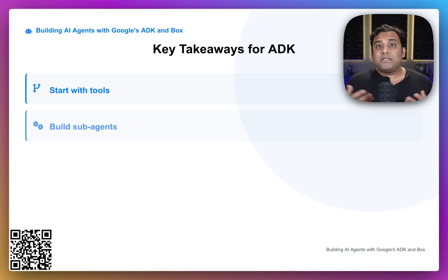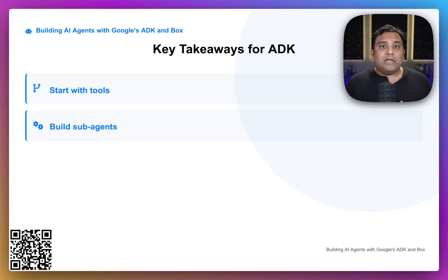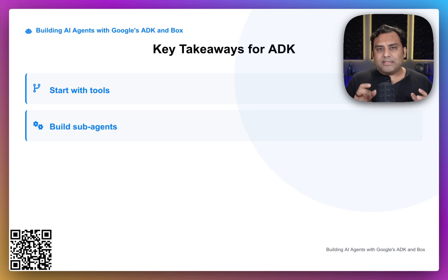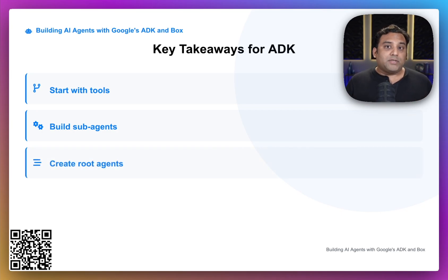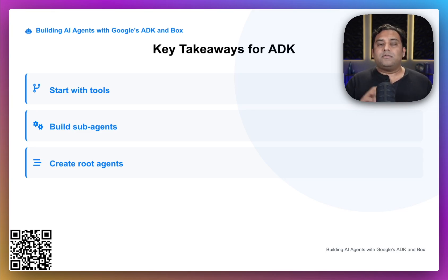Next, you build sub-agents. This is where you combine those tools with LLM intelligence. You equip an agent, like our Box Full Agent LLM, with a set of tools and, crucially, a clear set of instructions. This creates a specialist that knows how and when to use its capabilities to accomplish a specific goal. Then, you create the root agent. The root agent is the orchestrator — its main job isn't to use the tools directly, but to manage the sub-agents and control the overall execution flow. It's the main entry point and the brain of the entire operation.